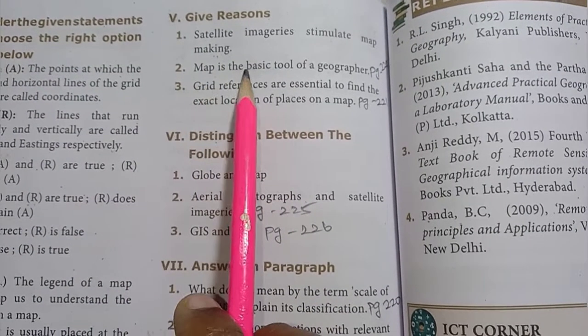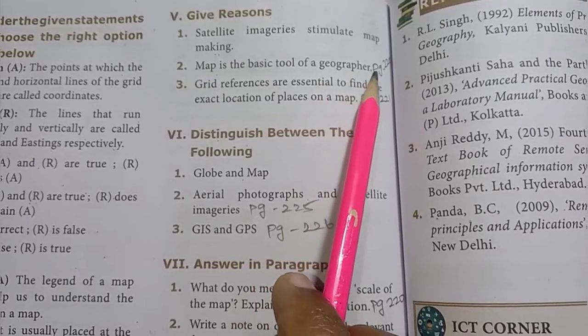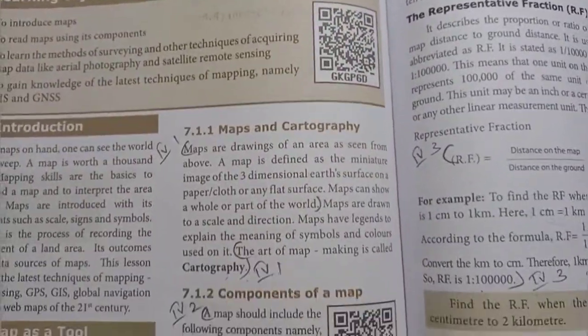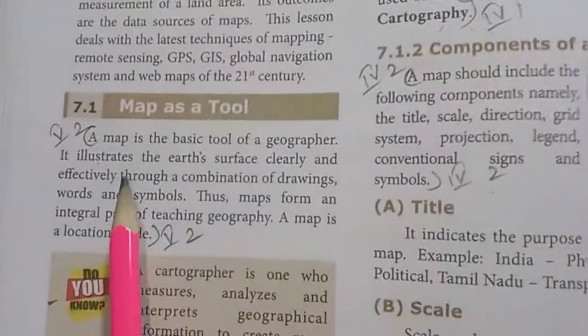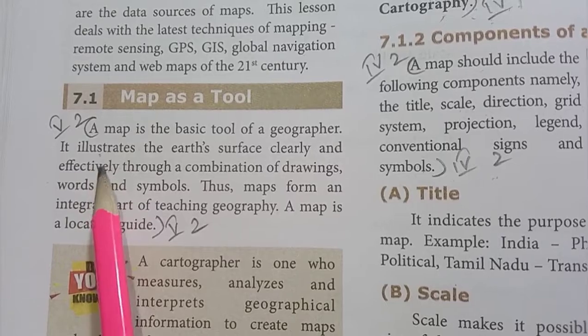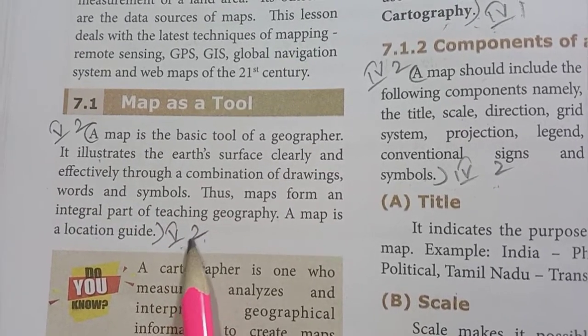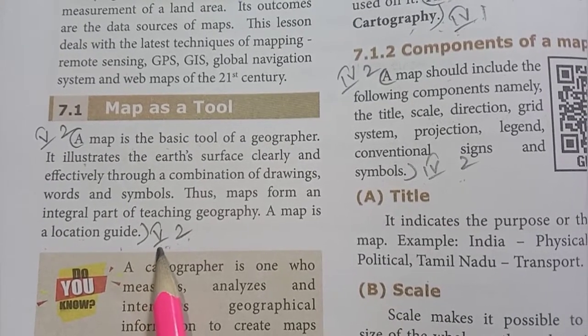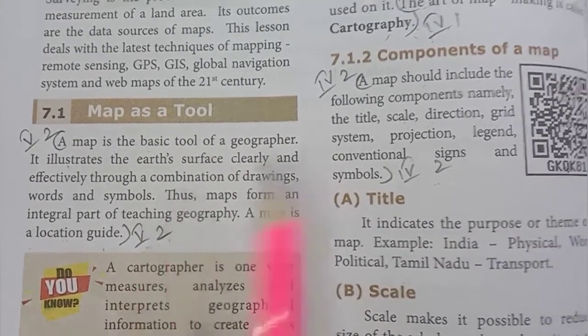Second, map is the basic tool of a geographer. Page number 220. Map as a tool, in the sixth lines. Fifth Roman numeral second one answer: map is the basic tool, that is the location guide.